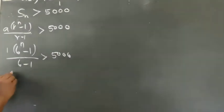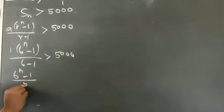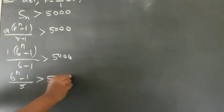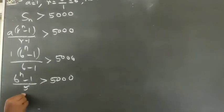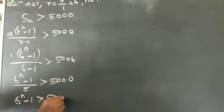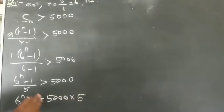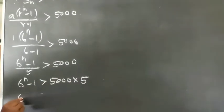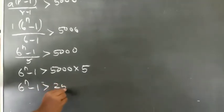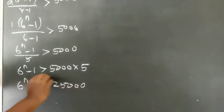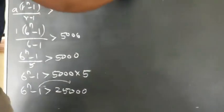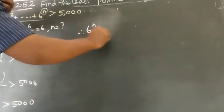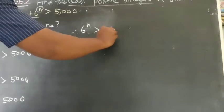6 power n minus 1 by 5 greater than 5,000. Multiply by 5: 6 power n minus 1 greater than 5,000 into 5. So 6 power n minus 1 greater than 25,000.